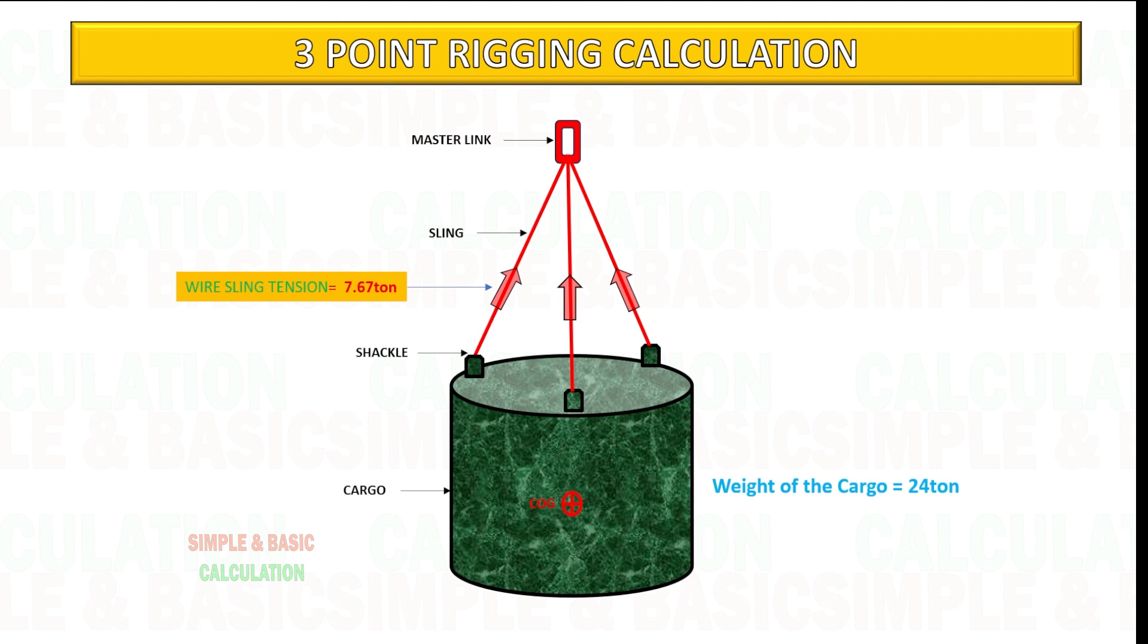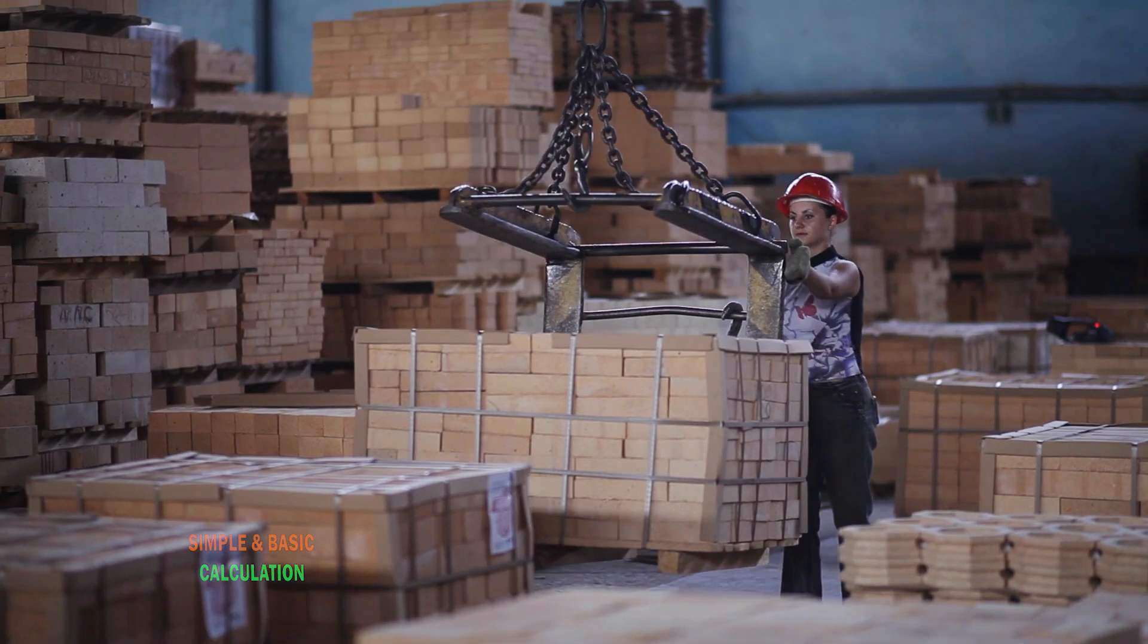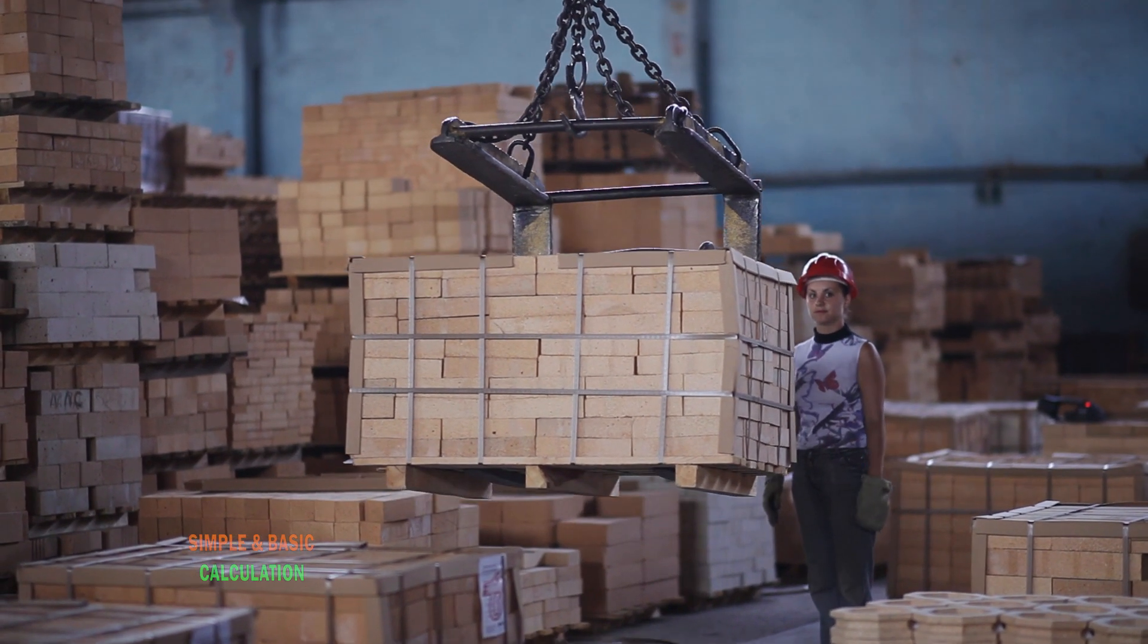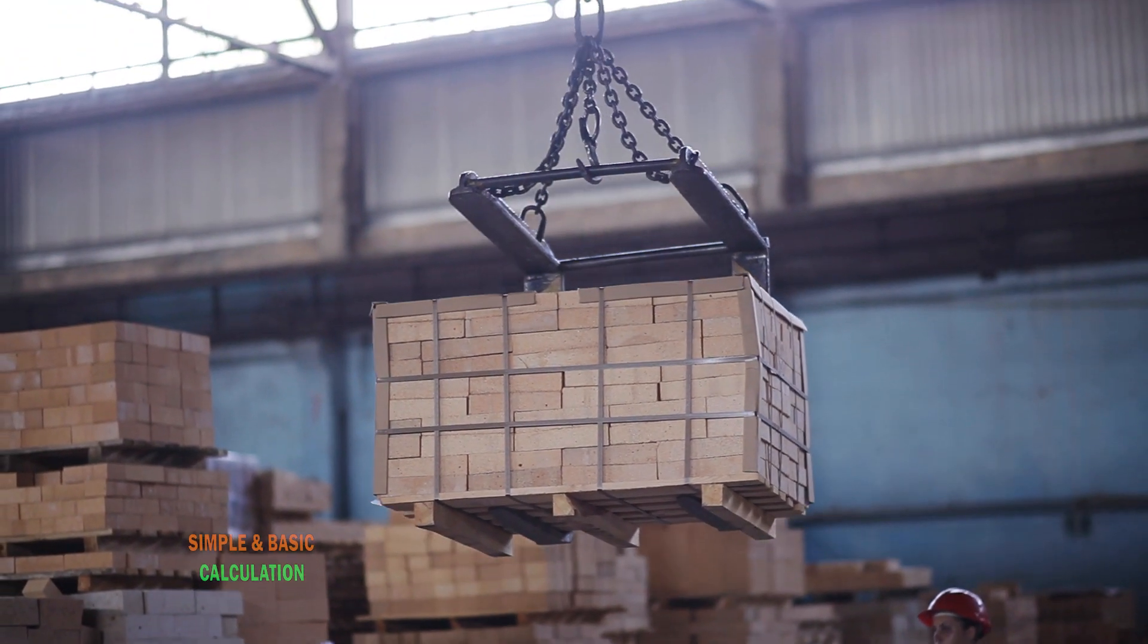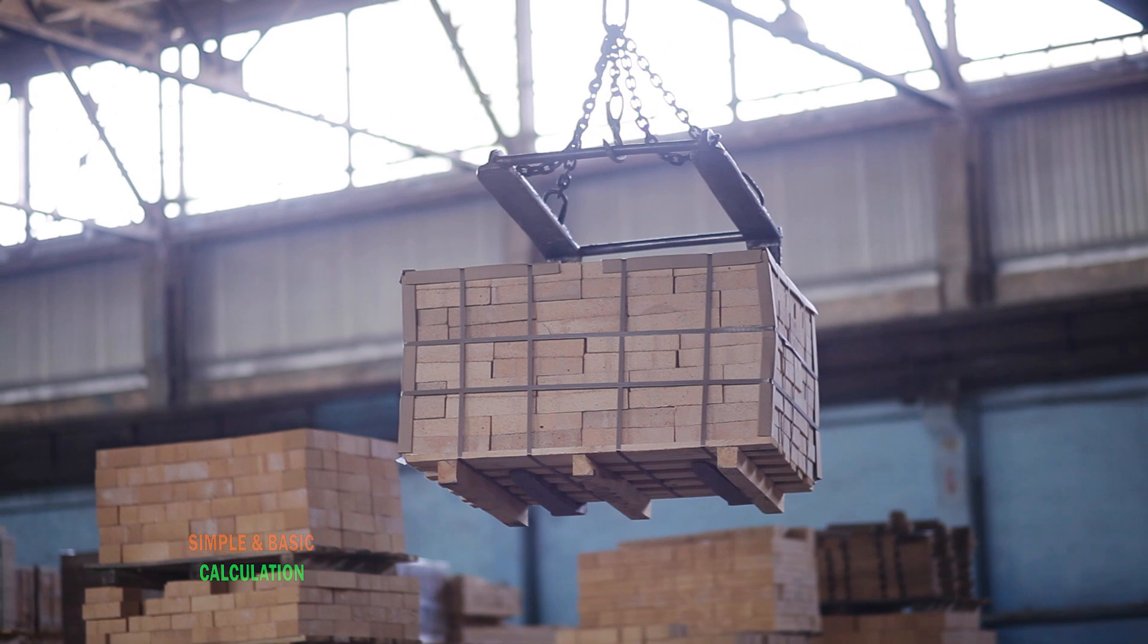For safety point of view, usually in three lifting point only two slings are carrying the load and the third sling is for balancing. Better to choose more than 12 ton rigging capacity.